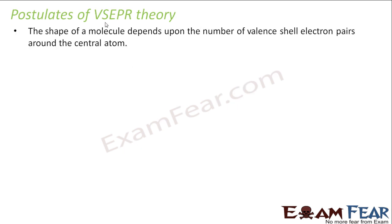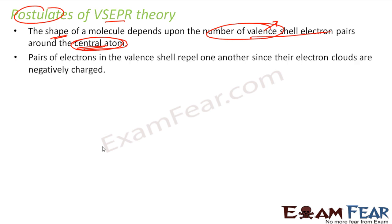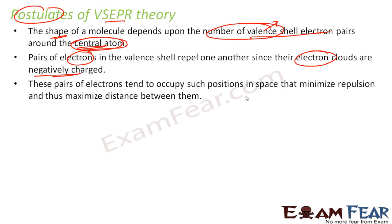The VSEPR theory predicts that the shape of a molecule depends on the number of valence shell electron pairs around the central atom. It states that pairs of electrons in the valence shell repel one another because all electrons carry negative charge, and like charges repel — basic physics. They occupy positions that minimize repulsion and maximize the distance between them, thereby reducing their energy.